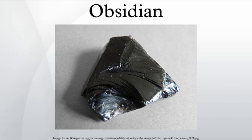Obsidian is the rock formed as a result of cooled lava, which is the parent material. Having a low water content when newly formed — typically less than 1% water by weight — it becomes progressively hydrated when exposed to groundwater, forming perlite. Tektites were once thought by many to be obsidian produced by lunar volcanic eruptions, though few scientists now adhere to this hypothesis.